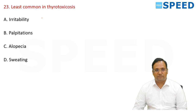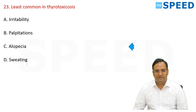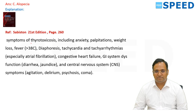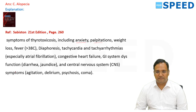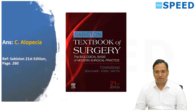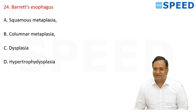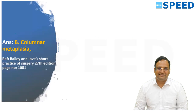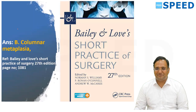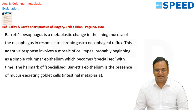Less common in thyrotoxicosis is alopecia. Common symptoms include anxiety, palpitation, weight loss, diaphoresis, tachycardia, tachyarrhythmias, congestive heart failure, GI symptoms, and CNS symptoms — all except alopecia. Regarding Barrett's esophagus, any intestinal-type metaplasia is called Barrett's, and the right answer is columnar metaplasia. INI SS general surgery questions are straightforward.